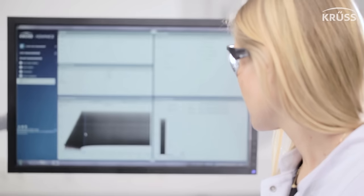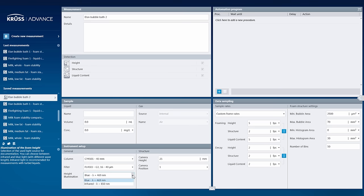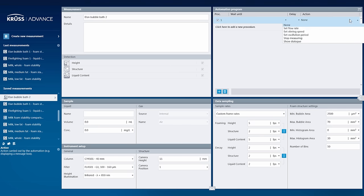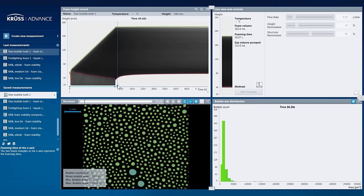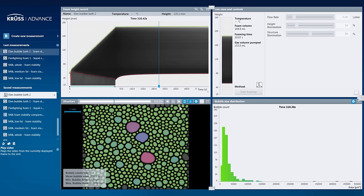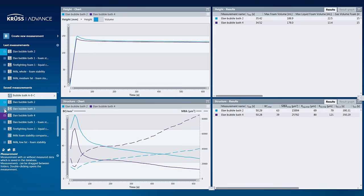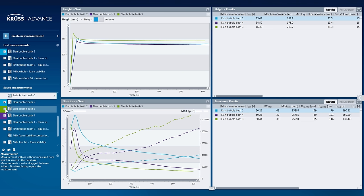Our intuitive software, ADVANCE, controls the DFA 100. With ADVANCE, all of the measurement parameters are customizable and every measurement can be fully automated. It is easy to use, allows live observation, and provides numerous reports. Results can be compared between different measurements and exported in many different ways.